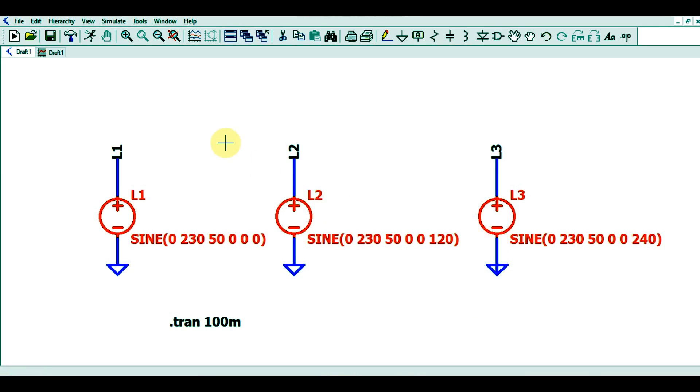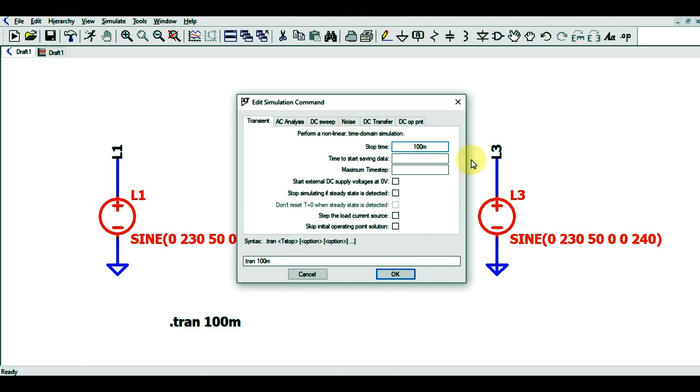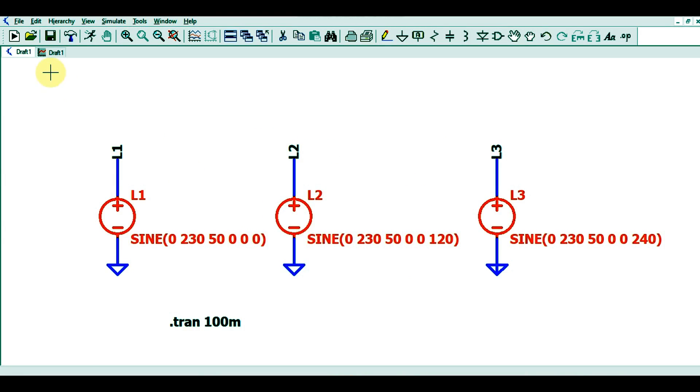L3. Now you can run transient analysis. Go to Simulate > Edit Simulation Command, and you can see the parameters. I've selected a stop time of 100 milliseconds. Click on it and